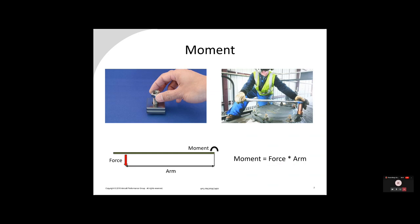We apply moments whenever we tighten a bolt or nut. Done with fingers it can be just a few inch-pounds, but with a large wrench using arms and legs it can be thousands of inch-pounds. That's why we use tools — we can apply a much stronger moment when trying to tighten something.